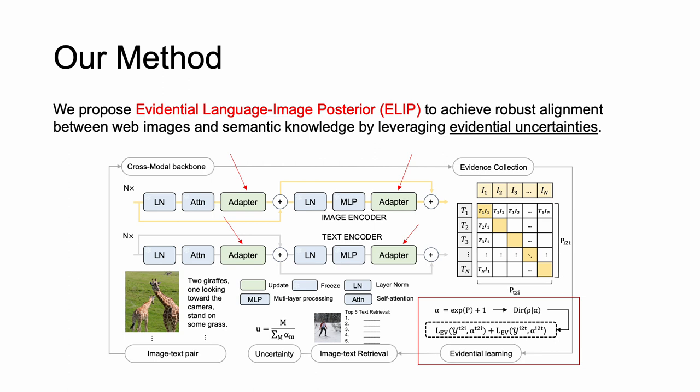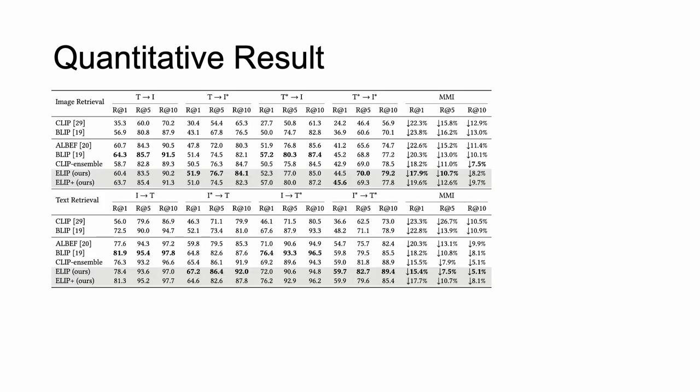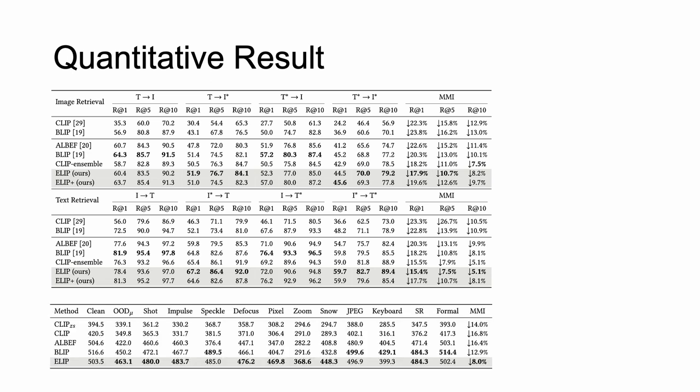And finally, our method can preserve high performance on in-distribution image-text retrieval, while achieving reliable performance in out-of-distribution retrieval. Finally, in our experiments, we provide a comparison between ELIP and three baseline models using three evaluation metrics, which are Recall-at-K, mAP, and RSUM.